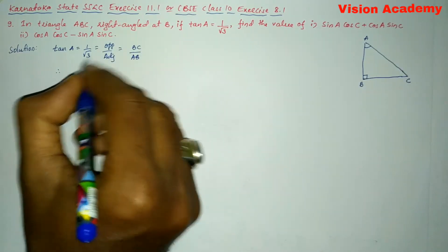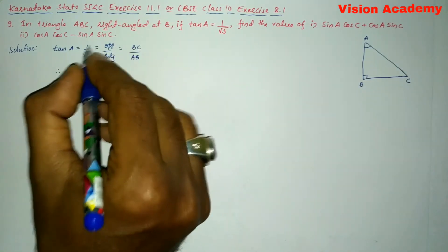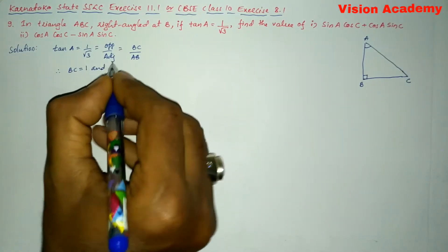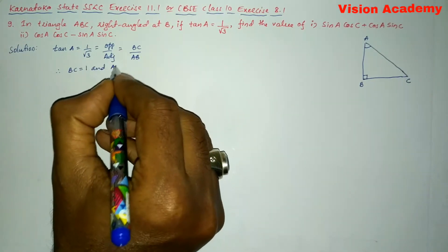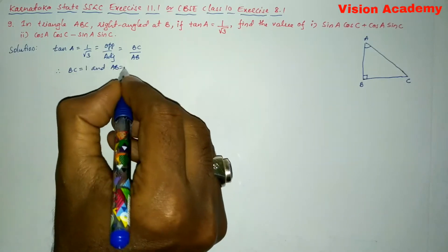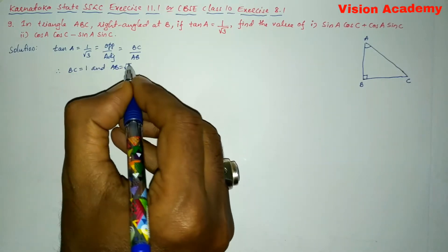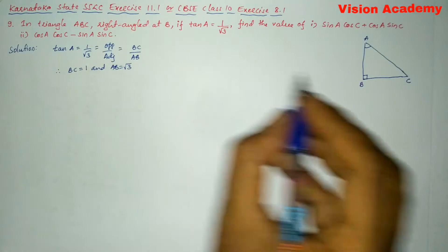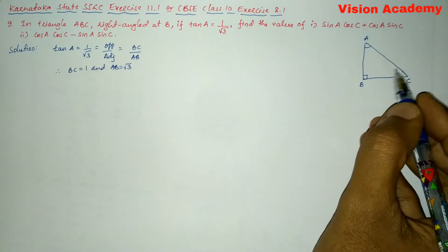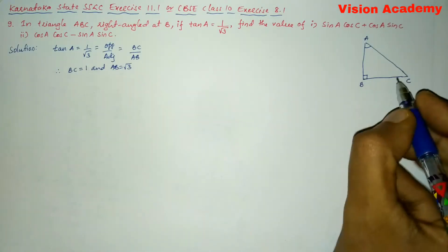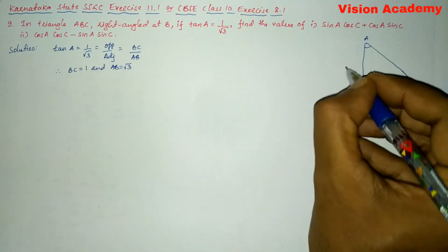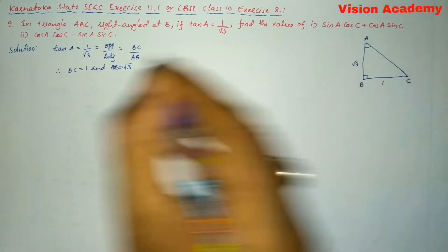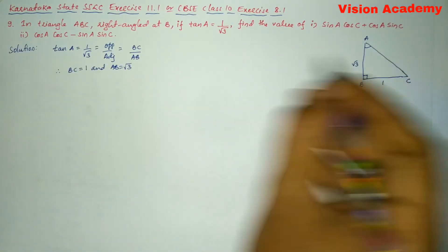Therefore, we can write BC is equal to 1 and AB is equal to square root of 3. Now by using Pythagoras theorem it is possible for us to find the other side. Here BC is 1 and AB is square root of 3, and we need to find AC.